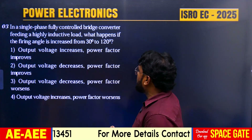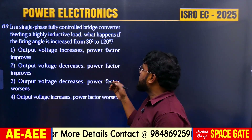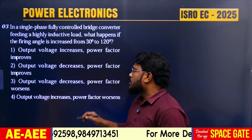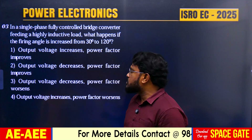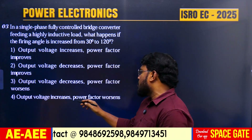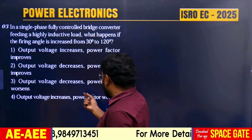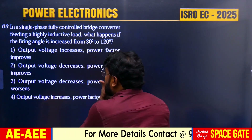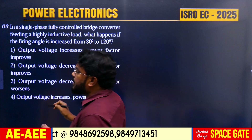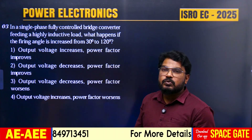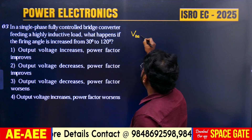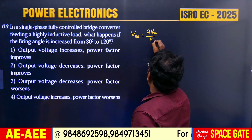Question 3: In a single-phase full-control bridge converter feeding a highly inductive load, what happens if the firing angle is increased from 30° to 120°? Options: output voltage increases and power factor improves; output voltage decreases and power factor improves; output voltage decreases and power factor decreases; output voltage increases and power factor decreases. For a highly inductive load, the load current is constant and ripple-free.